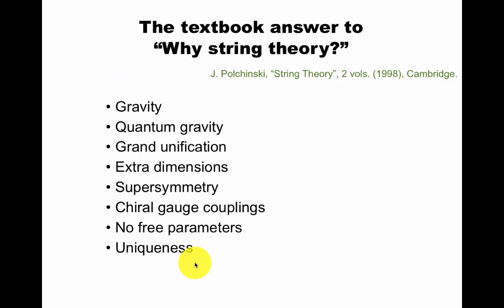The textbook answer to Why String Theory is it contains classical gravity, quantum gravity, grand unification, extra dimensions, these ideas have showed up in other contexts, supersymmetry, chiral gauge couplings like in the Standard model, left-handed and right-handed particles at different gauge representations, no free parameters, and is the theory unique?